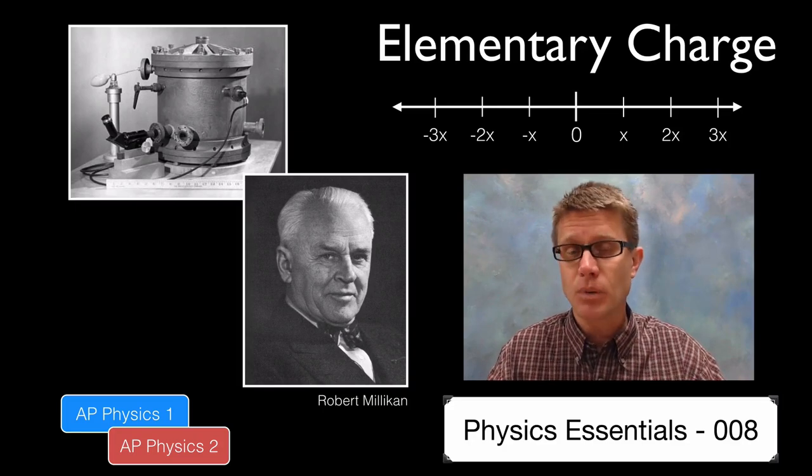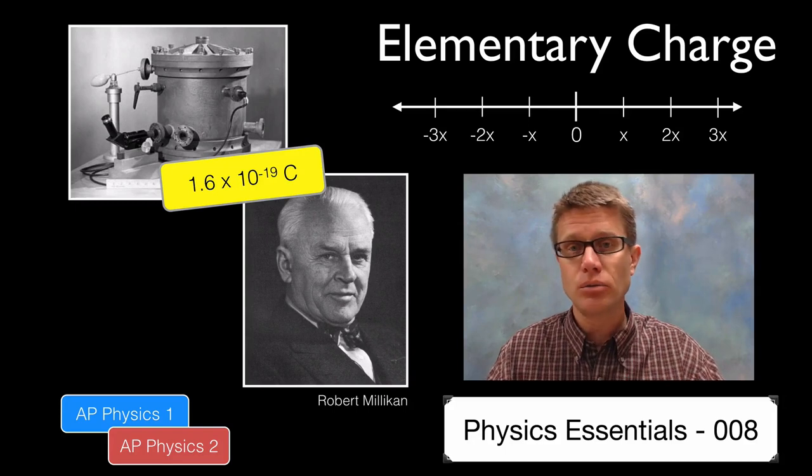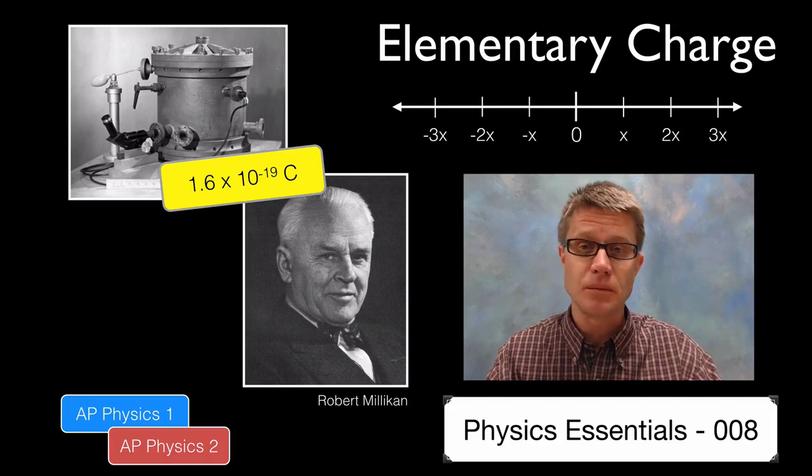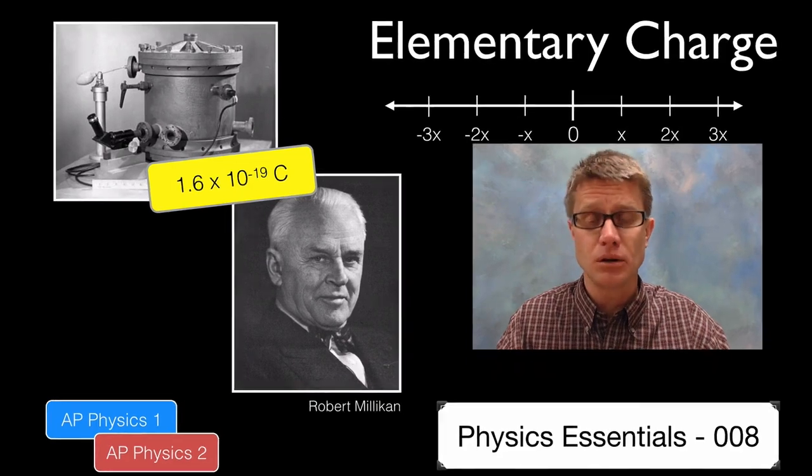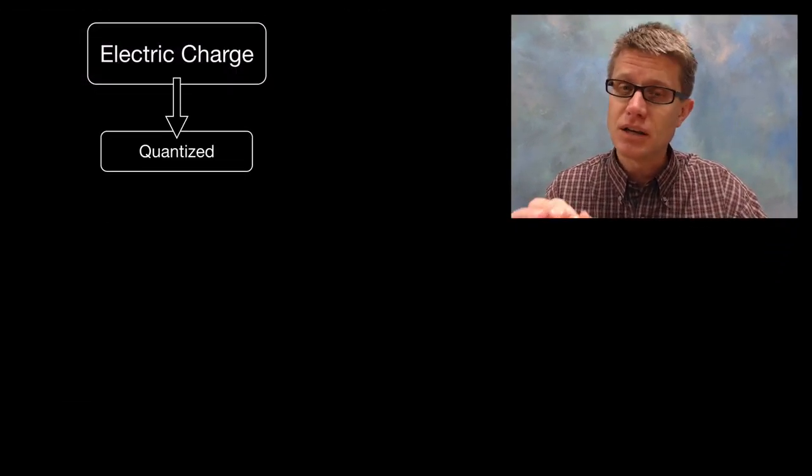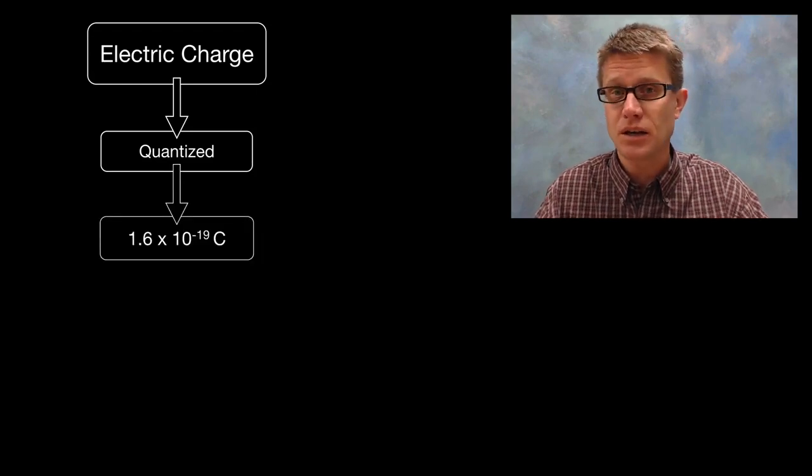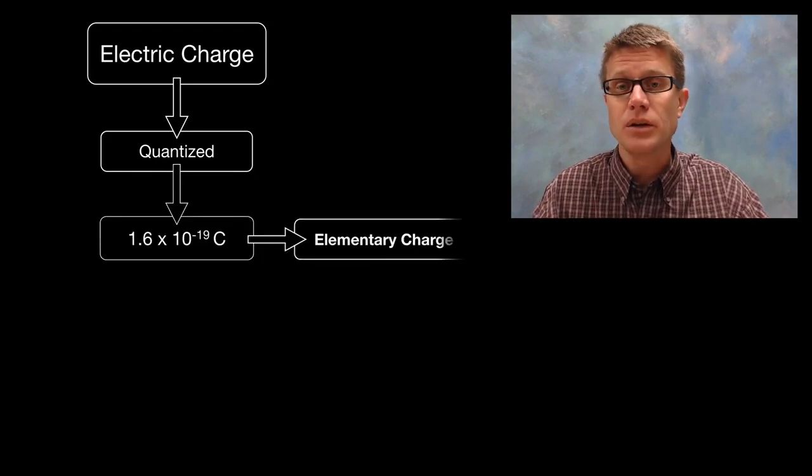What that means is that charge smallest unit is going to be 1.6 times 10 to the negative 19th coulombs. Sometimes positive, sometimes negative, but never in the middle. And so electric charge is quantized. What that means is it is in discrete units. And this was calculated to be 1.6 times 10 to the negative 19th coulombs. We now refer to this as elementary charge.